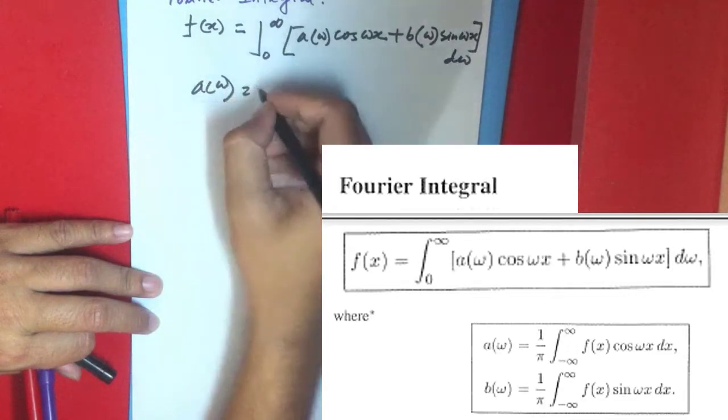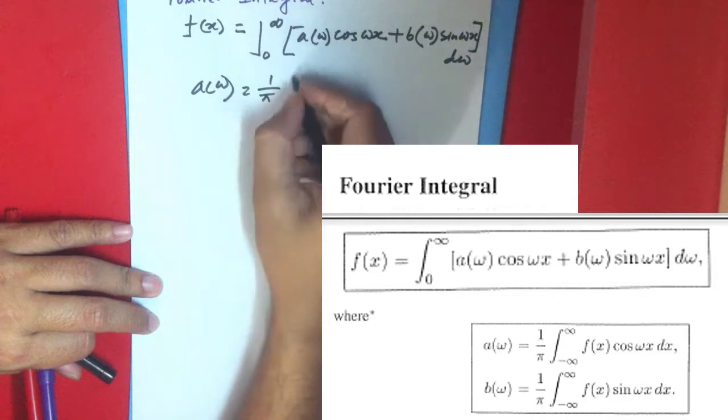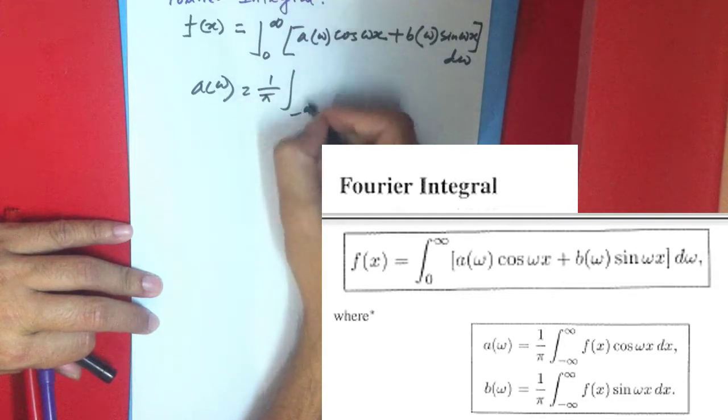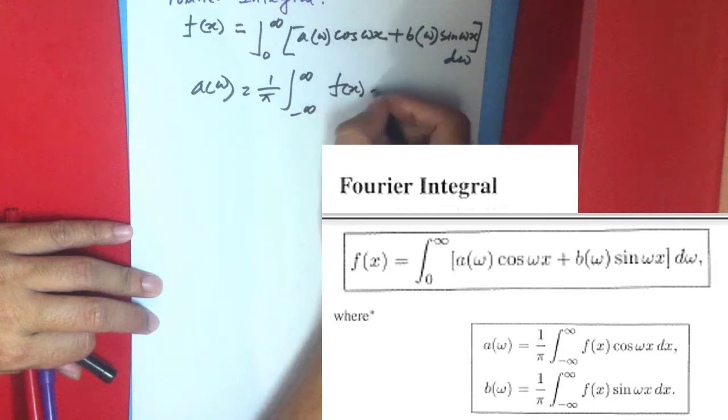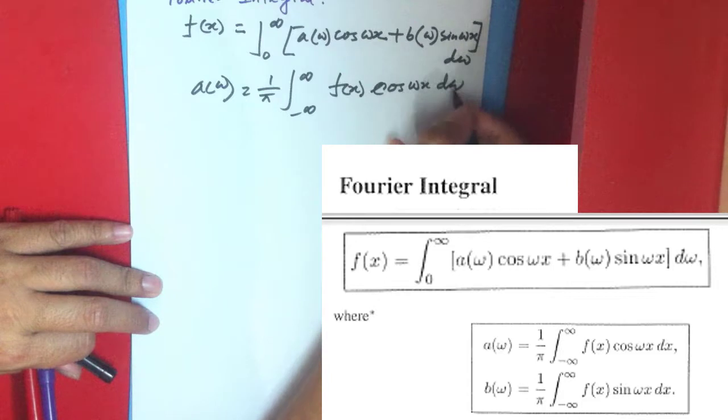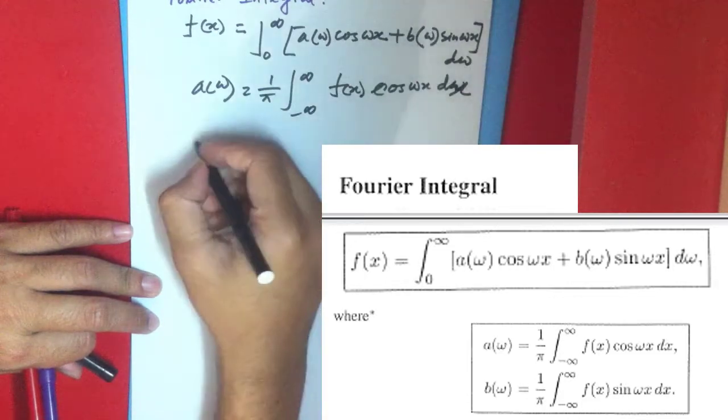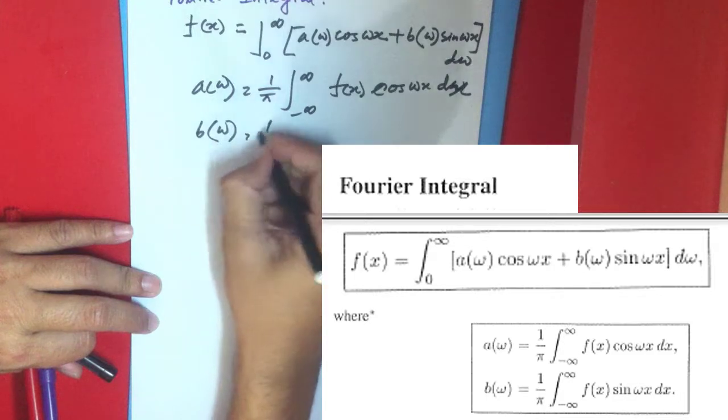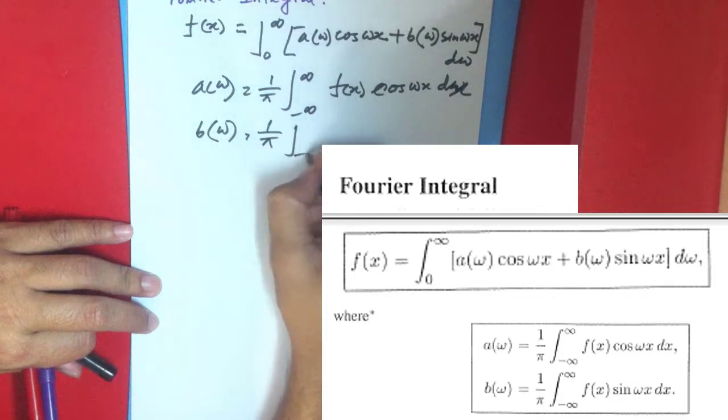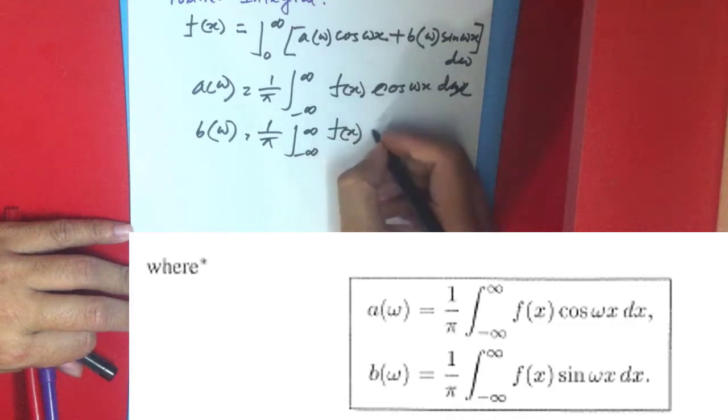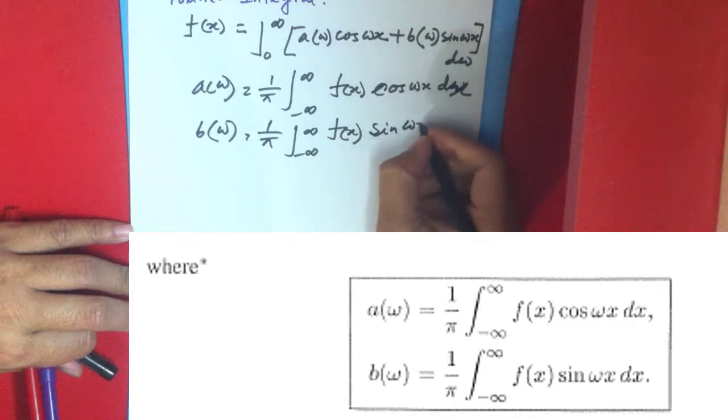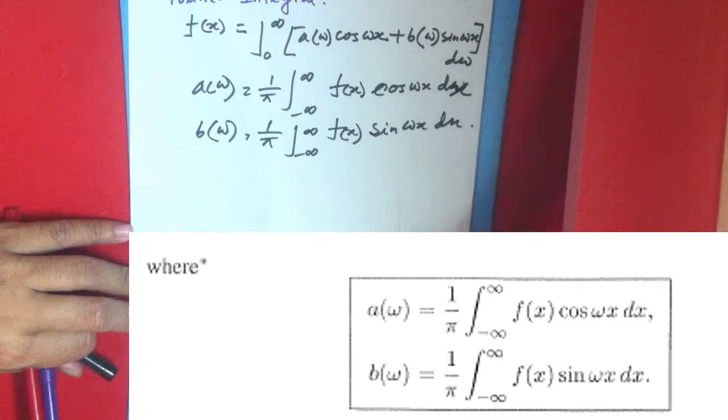Where a(ω) equals 1/π times the integral from -∞ to +∞ of f(x) cos(ωx) dx, and b(ω) equals 1/π times the integral from -∞ to +∞ of f(x) sin(ωx) dx.